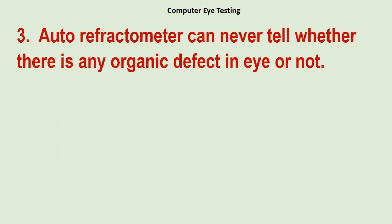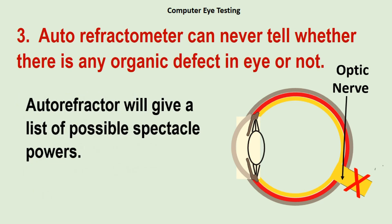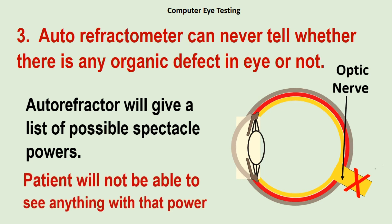Number three: the auto refractometer can never tell whether there is any organic defect in the eye. For example, imagine a situation where an individual has lost vision due to optic nerve damage — either due to injury or a disease process — while the eyeball itself appears normal. If tested with an auto refractometer, it will give a list of possible spectacle powers, but with those powers the person will not be able to see anything, because the defect is outside the eye in the form of a damaged optic nerve situated behind the eyeball.